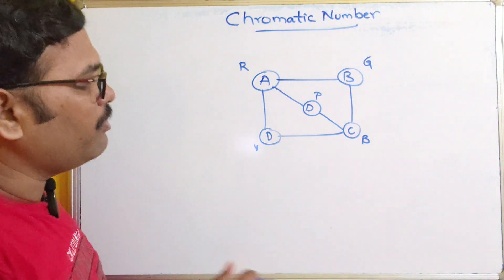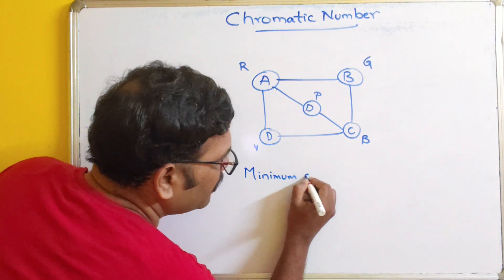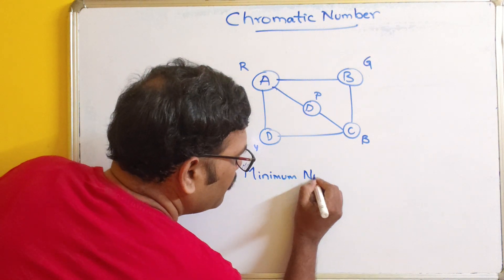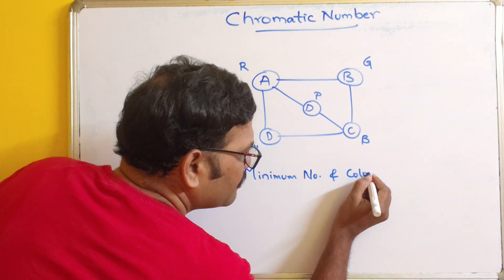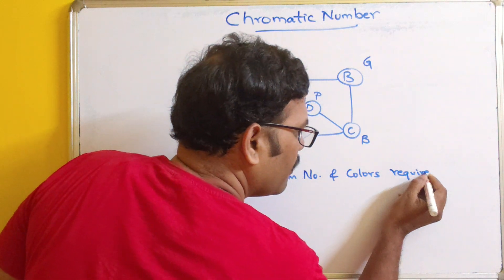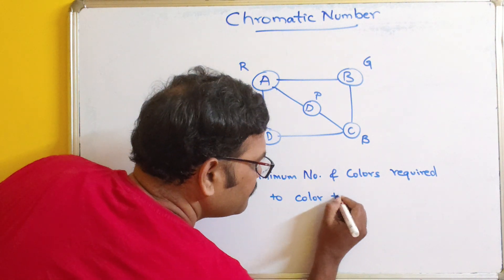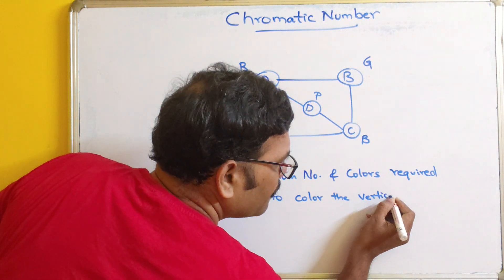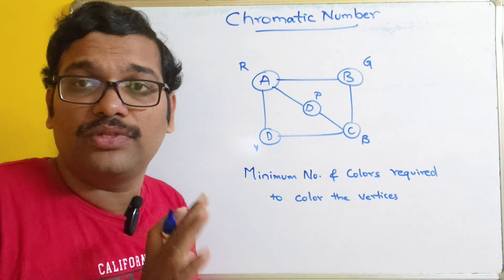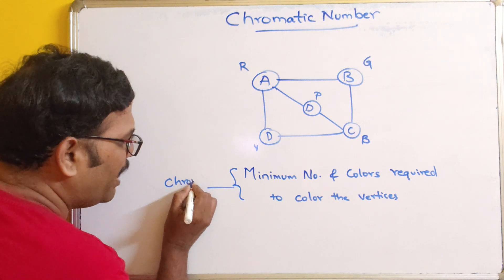The minimum number of colors required to color the vertices such that no two adjacent vertices are filled with the same color — this is called the chromatic number.